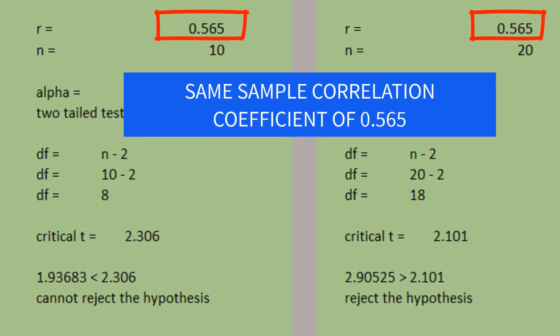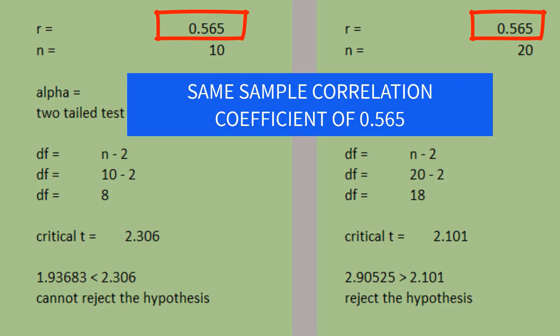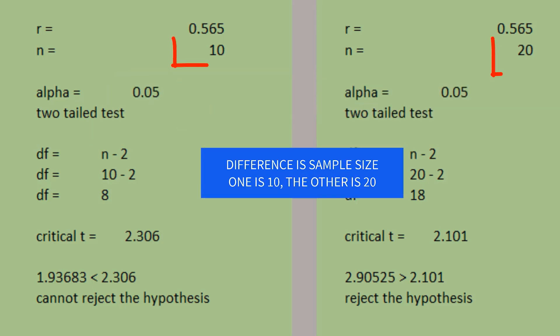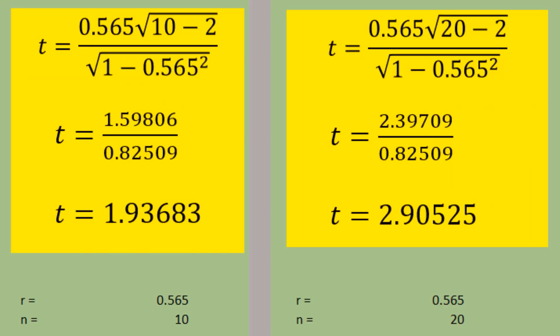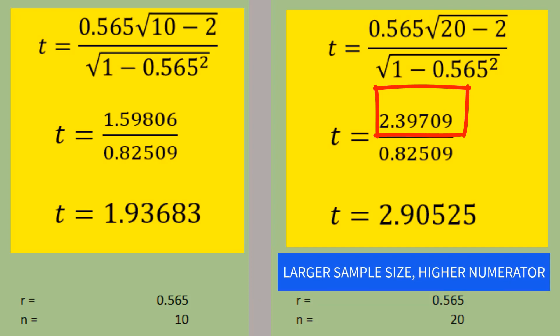The only difference is the sample size. One is 10 while the other is 20. They generate different t-values. As you can see, the one with the larger sample size of 20 also has a higher numerator.